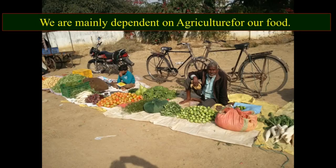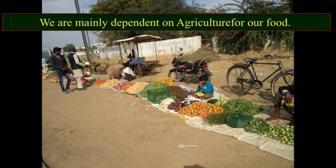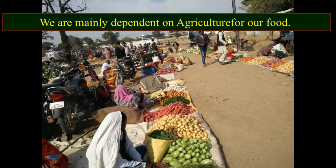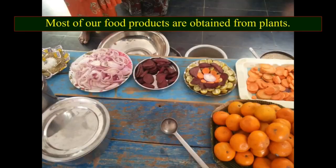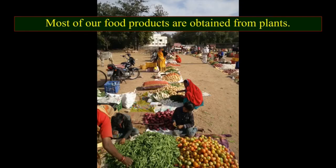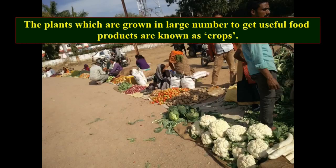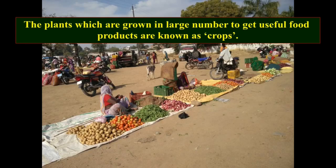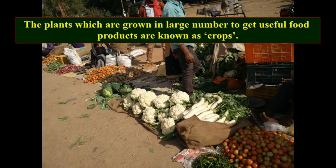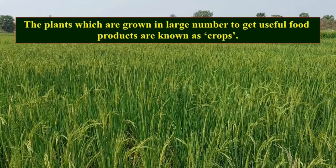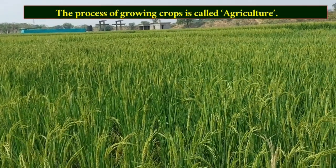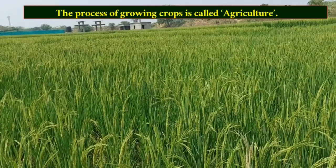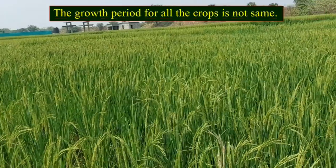We are mainly dependent on agriculture for our food. Most of our food products are obtained from plants. The plants which are grown in large numbers to get useful food products are known as crops. The process of growing crops is called agriculture.